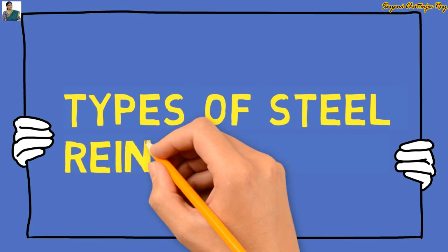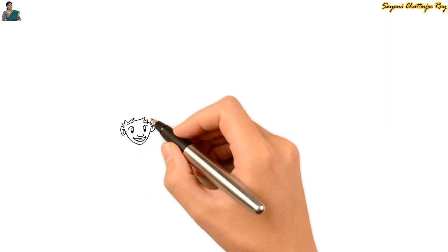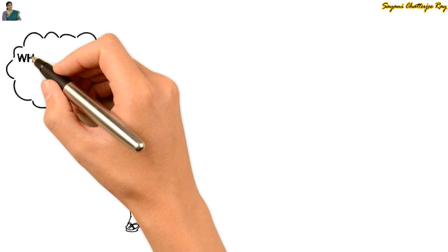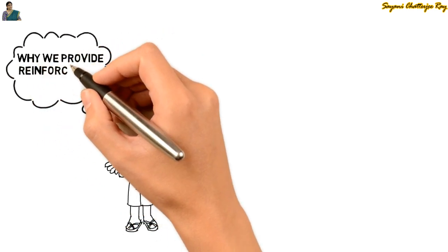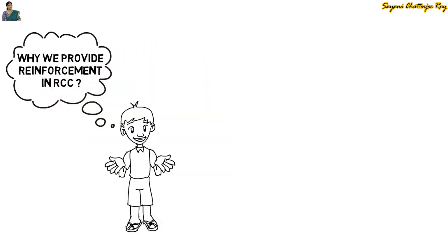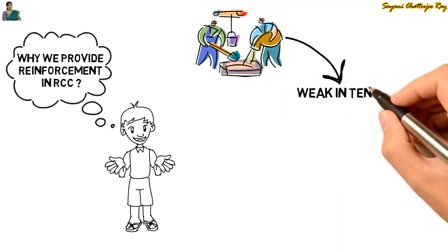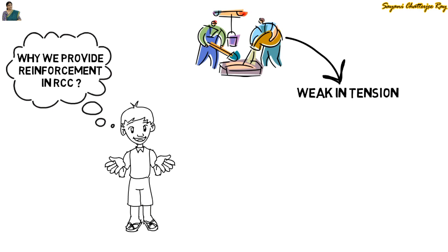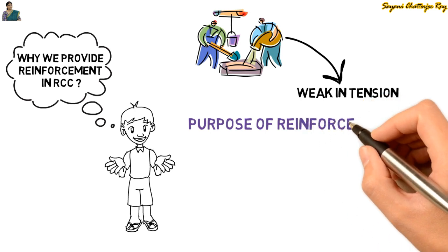The very first thing that arises in our mind is: why do we provide reinforcement in an RCC structure? Let's try to find out this reason first. Concrete is generally weak in tension, and so it has to be reinforced properly with a suitable material. Now let's see the purpose of providing reinforcement in RCC structures.